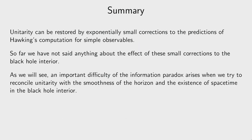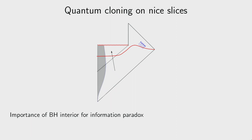We have the scenario of unitarizing the black hole by small corrections, but there are additional problems. A simple way to phrase them is the quantum cloning paradox on nice slices. Assuming the previous unitarization scenario is correct, this thought experiment seems to lead to a contradiction — and in particular we imagine that the black hole evaporation is unitary.